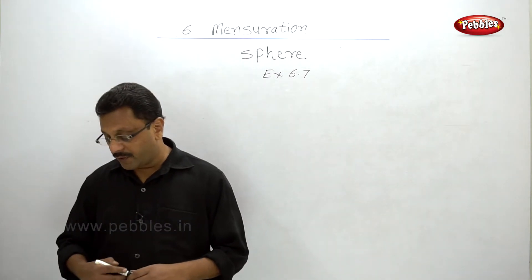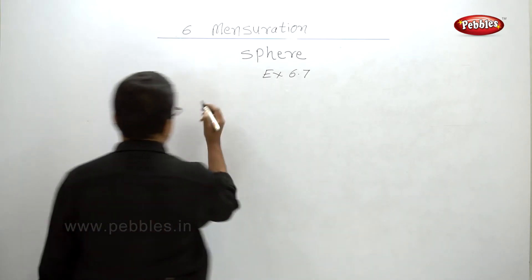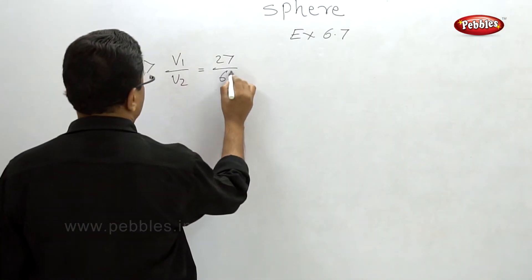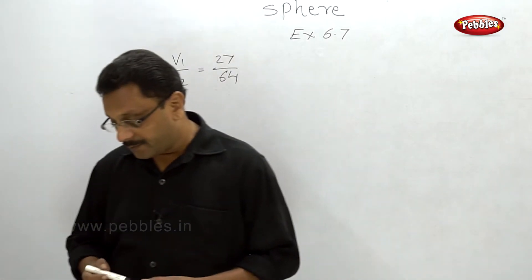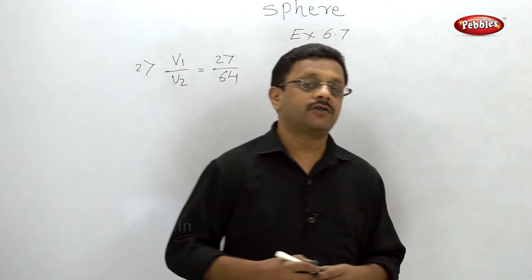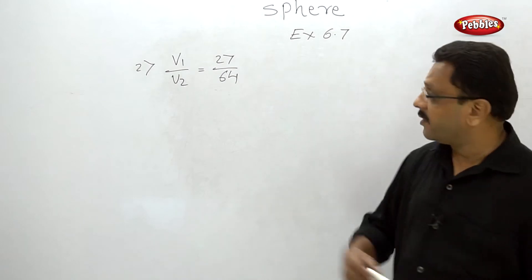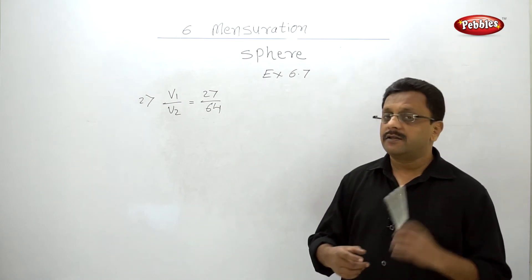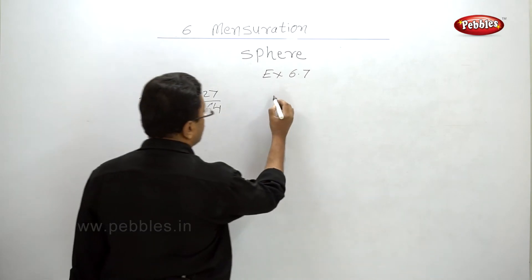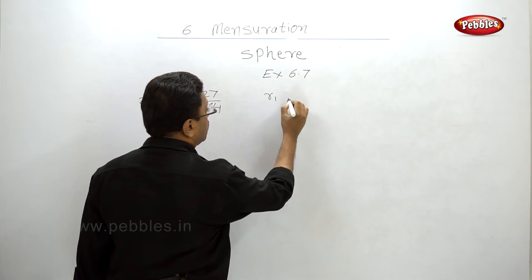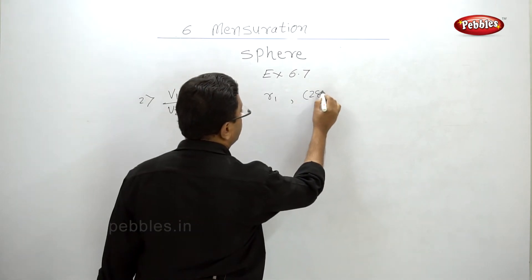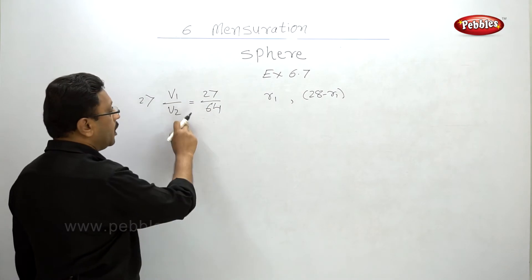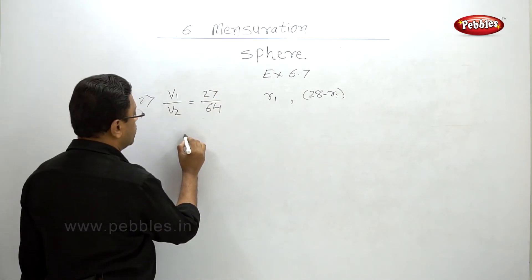Second problem: the volumes of two spheres are in ratio 27:64, so V1/V2 = 27/64. They say find the radii if the sum of their radii is 28 cm. If the radius of the first sphere is r1, then the radius of the second sphere will be 28 minus r1. We substitute in the formula: V1/V2 = (4/3 π r1³) / (4/3 π (28 - r1)³) = 27/64.